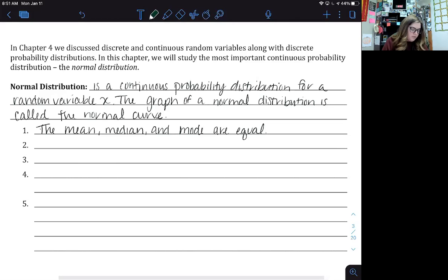Next we have that the normal curve is bell-shaped and symmetric about the mean.